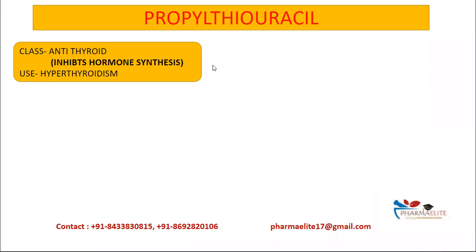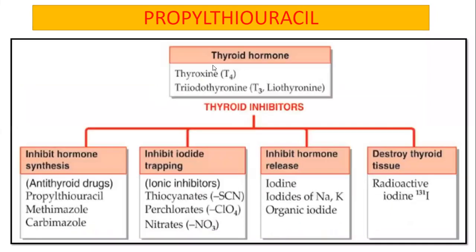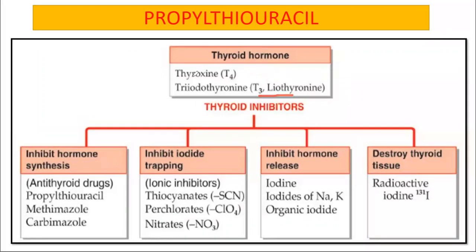This is the classification of antithyroid drugs, taken from KDT. Thyroid hormones are of two types: T4, known as thyroxine, which is the main hormone, and T3, known as triiodothyronine or liothyronine.